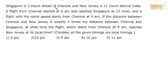Singapore is 3 hours ahead of Chennai, and New Jersey is 11 hours behind India. A flight from Chennai started at 6 am and reached Singapore at 12 noon. A flight with the same speed starts from Chennai at 9 am. If the distance between Chennai and New Jersey is exactly 4 times the distance between Chennai and Singapore, at what time does the flight starting from Chennai at 9 am reach New Jersey at its local time?